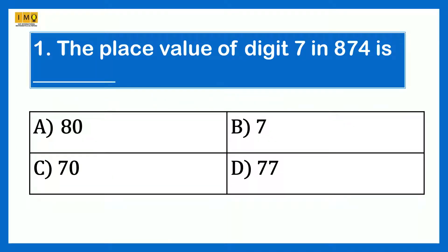The place value of digit 7 in 874 is: Option A 80, Option B 7, Option C 70, Option D 77. The answer is 70. In 874, 7 is in the tens place. Therefore, the place value of 7 is 70.